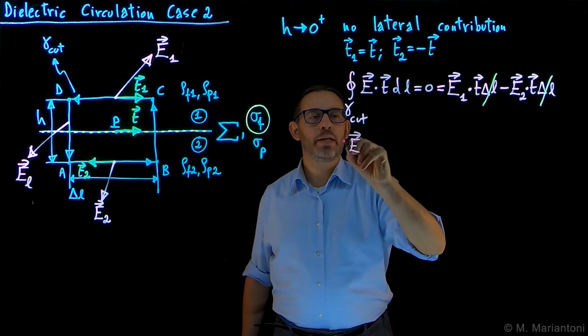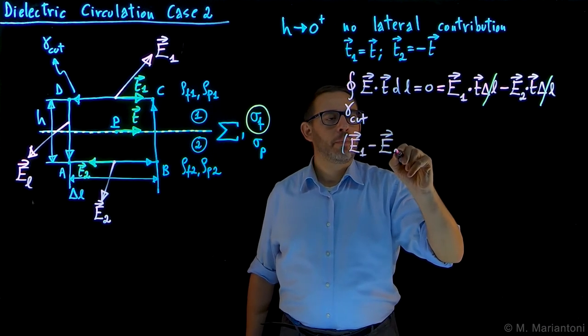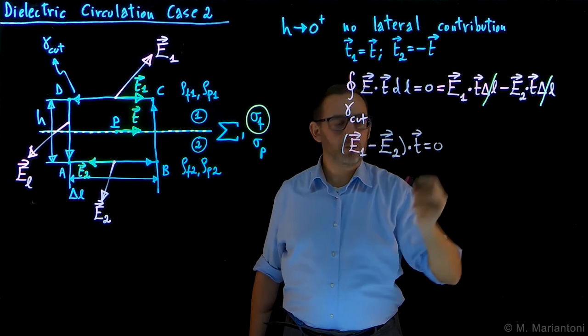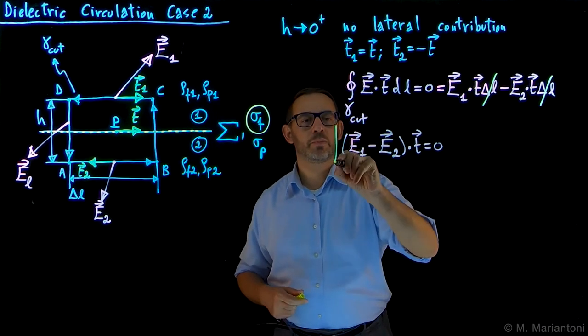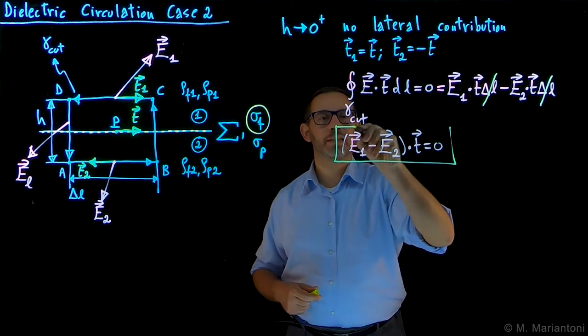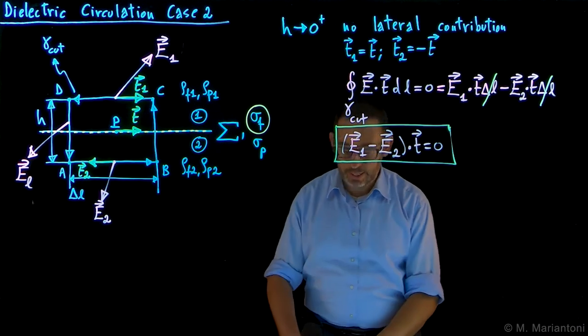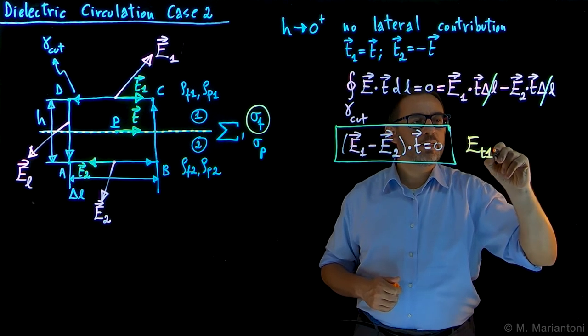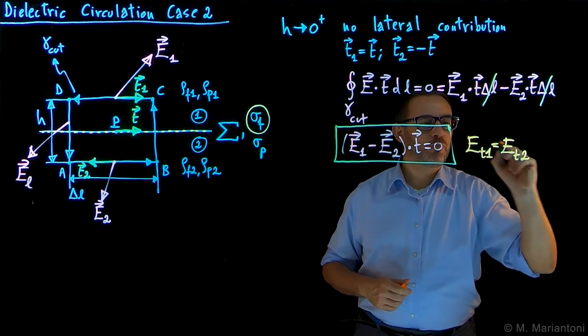Which is E1 minus E2 dotted with T equals zero, which equivalently we can also write in terms of components, tangent components. This effectively is saying that E1T is equal to E2T, as expected already from PS 242.